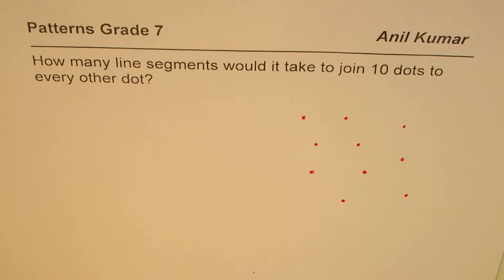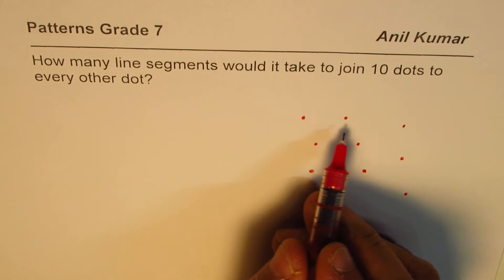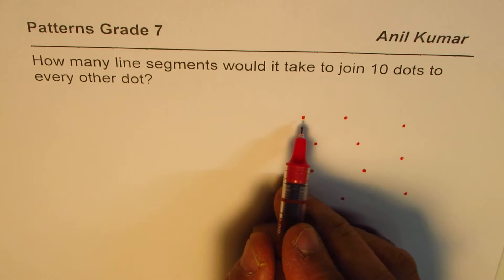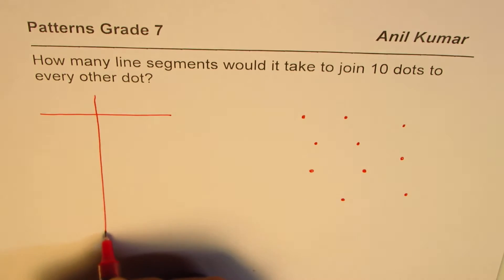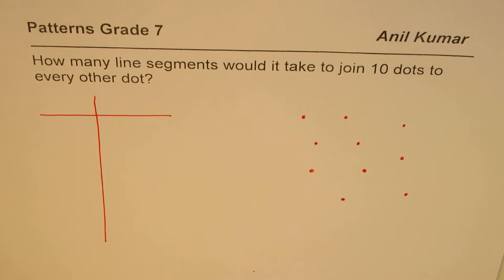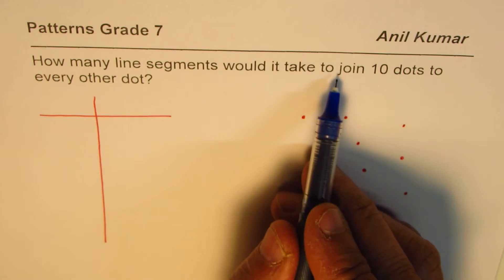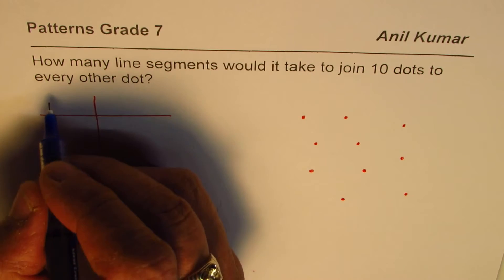For such questions we should try to follow a pattern and record the values. What we will do is begin with one dot and record the values in a T-chart. We'll observe the pattern and then conclude the result — that's the method we are going to follow. The question is: how many line segments would it take to join 10 dots to every other dot?